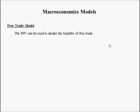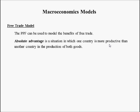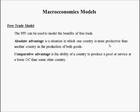Now let's apply the production possibility frontier to a model for free trade, which will demonstrate numerous benefits of free trade. Some concepts we need before getting into the free trade model: absolute advantage is the situation in which one country is more productive than another in the production of both goods. Comparative advantage is the ability of a country to produce a good at a lower opportunity cost than some other country.